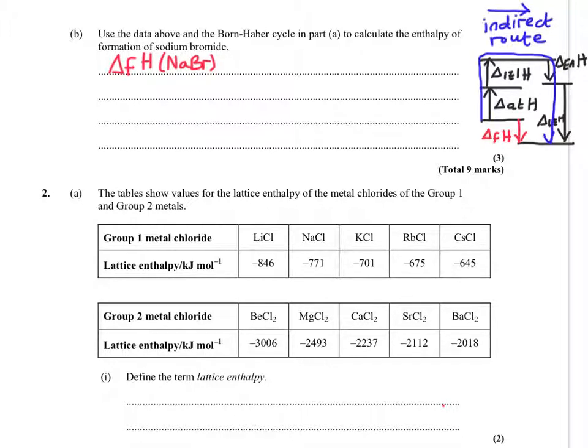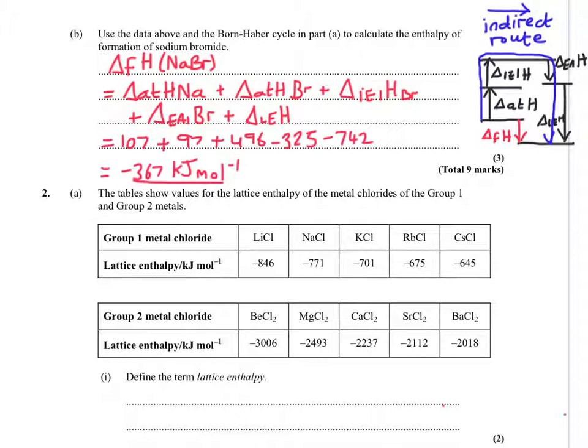So as we expected, it said, use the data above and the Born-Haber cycle in part A to calculate the enthalpy of formation of sodium bromide. That was the one that we put in in blue to show us. So looking at a very simplified Born-Haber sketch on the right-hand side of the screen, you can see where delta FH fits in. And according to Hess's law, that would mean we have to work out an indirect route. So it's all of these ones added up. So we're putting the values in from the previous page. So that eventually gives us minus 367 kilojoules per mole. Now, be quite careful here that you're not mixing up your minuses and your pluses. So you can see that the blue arrow follows the direction of all the black arrows, so I didn't change any of the signs, because I'm not going against any of the black arrow's directions.